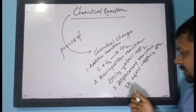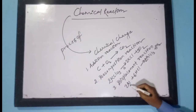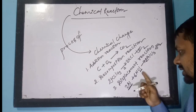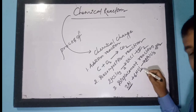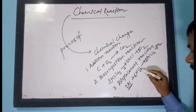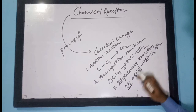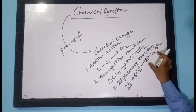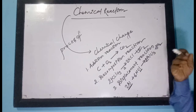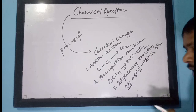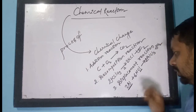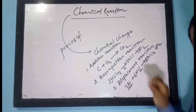Here we see that aluminium is displacing the chlorine from HCl. The aluminium is reacting with the chlorine and taking it away, leaving the hydrogen alone. This is called a single displacement reaction — only one element is displacing the other.